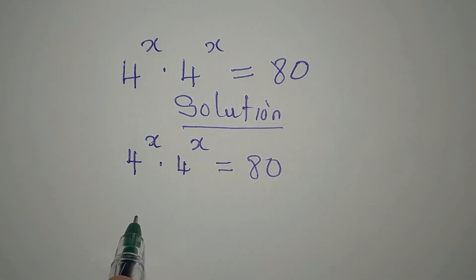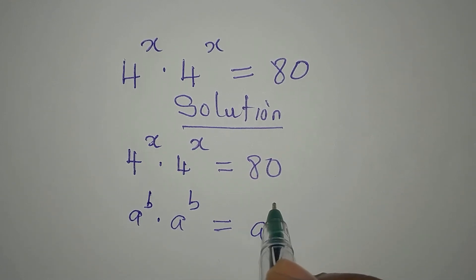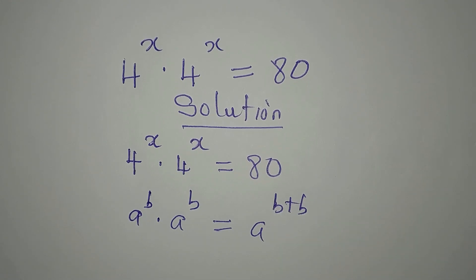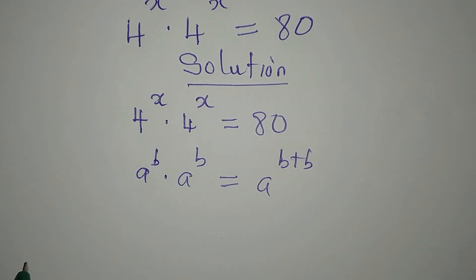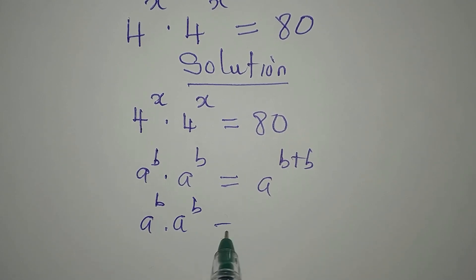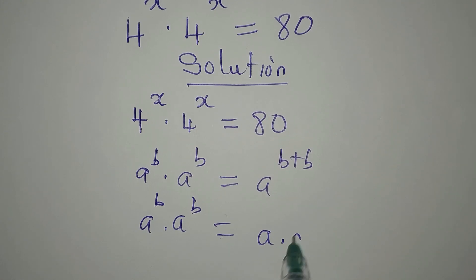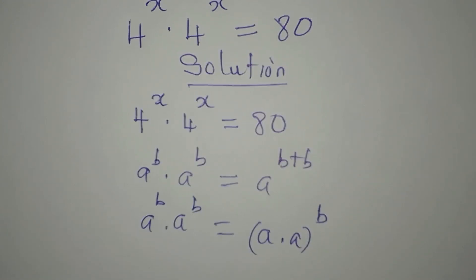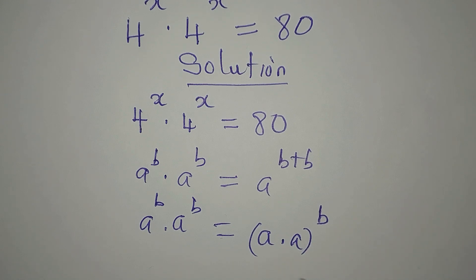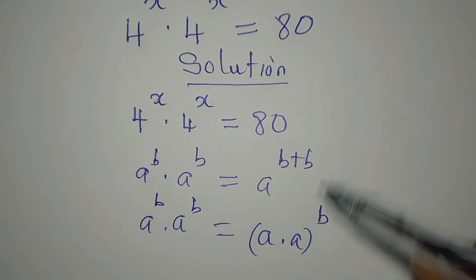Do you know that if you have a to the power of b times a to the power of b, this can be the same thing as a to the power of b plus b. Then this same thing can also be written as a times a to the power of b, meaning that you multiply the base and then pick one of the powers since the powers are the same. So it's either you do it this way or you do it in this form.